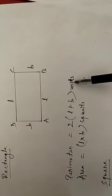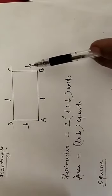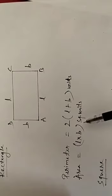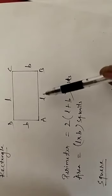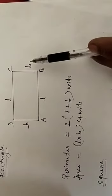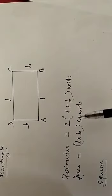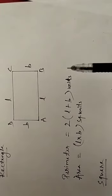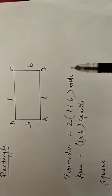The area of a rectangle is equal to length × breadth, in square units. For example, if the length is 5 cm and the breadth is 3 cm, then the area is 5 × 3 = 15 cm². This is how we find the area of the rectangle.